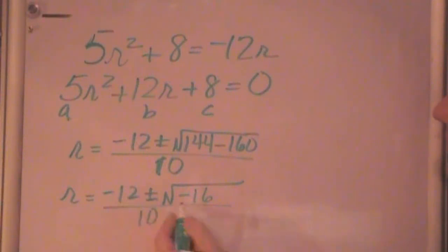So this becomes—remember negative 16 is just 4i—plus or minus 4i, so we're going to get minus 12 plus or minus 4i, all over 10. And now we can divide out a 2, which gives our denominator 5, 2i, and 6.